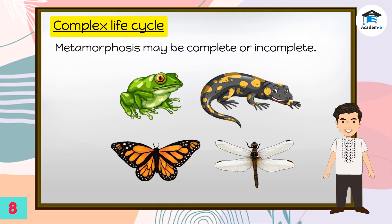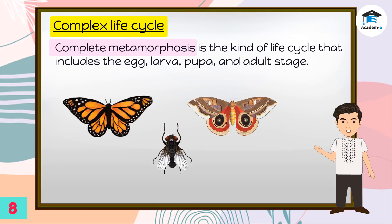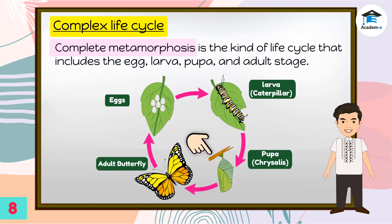Metamorphosis may be complete or incomplete. Complete metamorphosis is the kind of life cycle that includes the egg, larva, pupa, and adult stage. Most insects like butterflies, flies, moths, and mosquitoes undergo complete metamorphosis. The egg is the first stage in the life cycle. The larva is the second stage of growth — the egg transforms into a caterpillar, a plant eater. The pupa, or chrysalis, is the third stage of growth, where the larva stops eating and starts wrapping itself in a hard covering called a cocoon. In the adult stage, the cocoon breaks and an adult insect flies out.